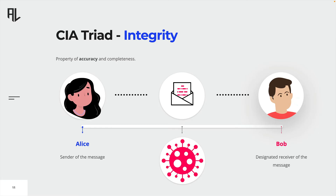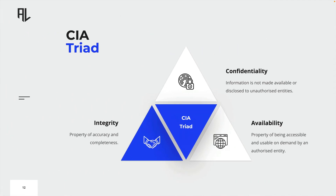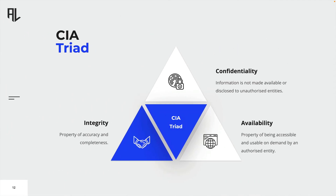Bob will not receive the initial message of Alice. Instead, he receives an altered message without even knowing so. The initial message is no longer accurate or complete.